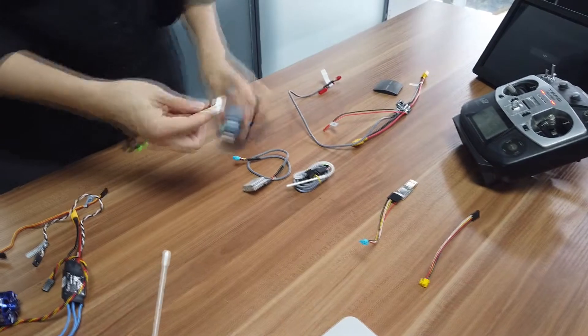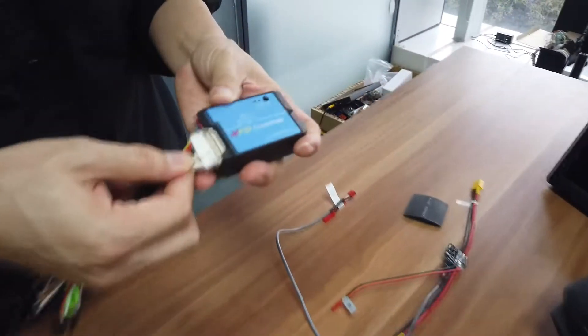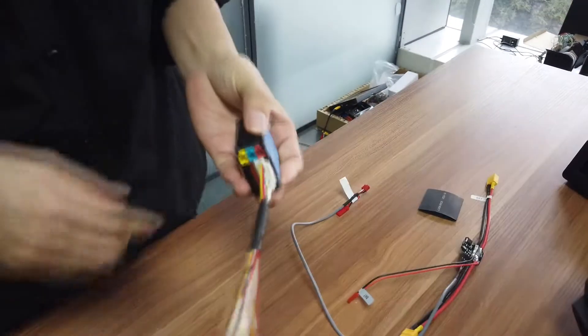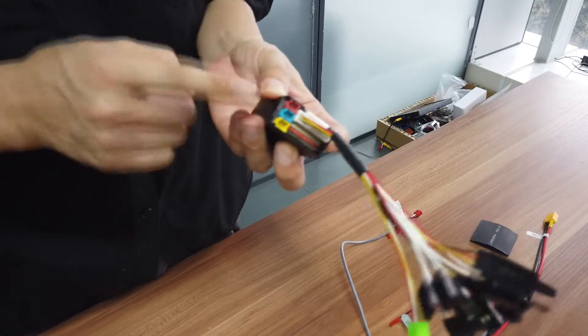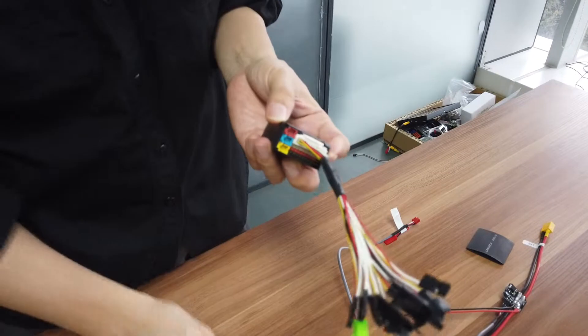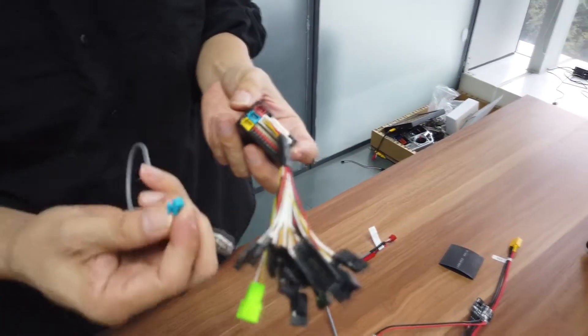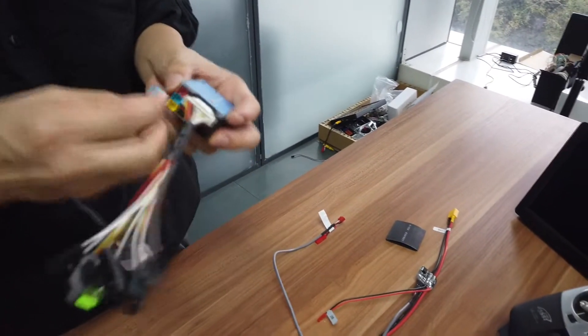Okay, we also use a Futaba transmitter. Connect this harness to the main unit. You can see the red one is for power supply. Blue one is for GPS. Just connect the same color plug to the same color socket.